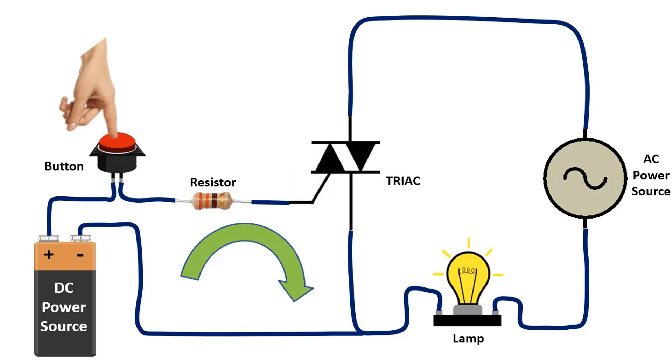Here, if we remove our hand from the button, that is, if we cut off the trigger coming from the gate pin, the lamp will turn off.